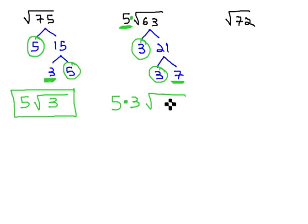What's left in the square root is a 7, and we have 5 times 3 times the square root of 7, or 5 times 3 is 15, times the square root of 7.